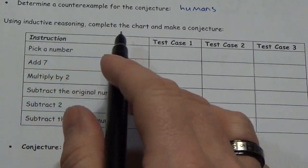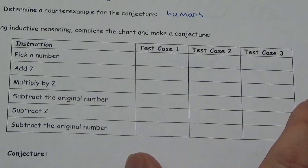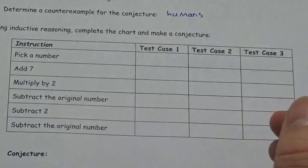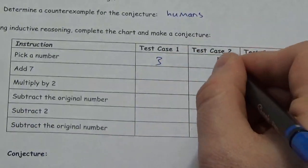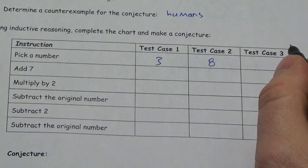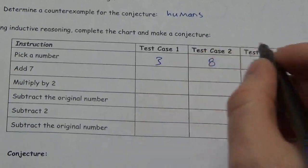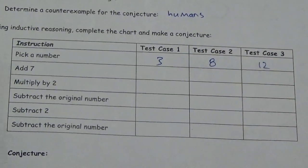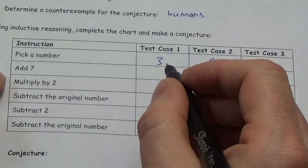We're going to use inductive reasoning, complete the chart, and make a conjecture. So let's pick the numbers here. We're going to do three test cases here. So, let's pick numbers here. I don't know. Let's make it three. Let's try an even number, let's say eight. So I have a prime, an even, and let's just throw an odd in there. Let's not make it that one. Let's make it, let's say, twelve. So, add seven.